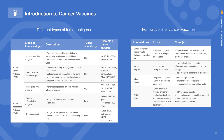The ideal antigen should be specifically expressed on cancer cells with no expression on normal cells. Ideally, the antigen should be necessary for cell survival and be highly immunogenic. Tumor antigens fall into two broad categories: tumor-associated antigens and tumor-specific antigens. Within each category, a number of different types of tumor antigens have been described, including cancer germline antigens, differentiation antigens, oncogenic viral antigens, and tumor-specific mutated antigens.